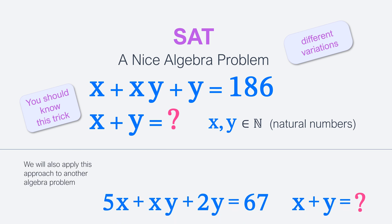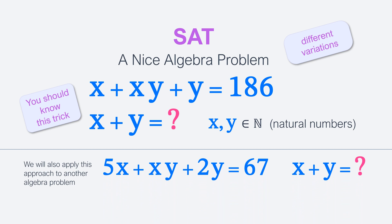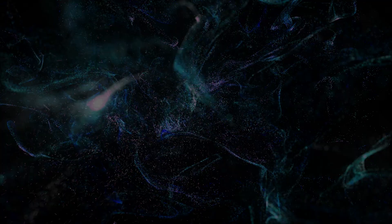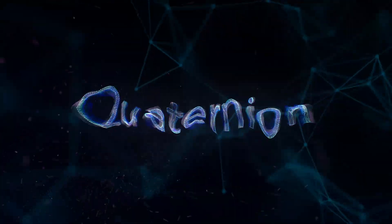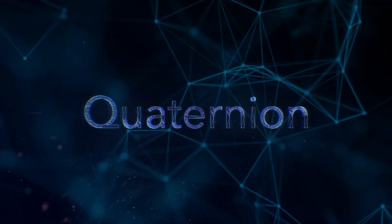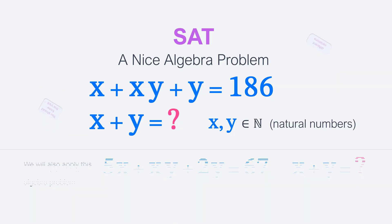And then we will apply this approach to another more tricky problem. The problem is as follows: x plus xy plus y is equal to 186. We need to find the sum of x and y, provided that x and y belong to the set of natural numbers — meaning x and y are positive integers.